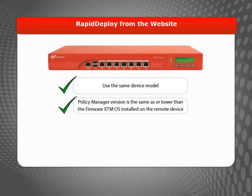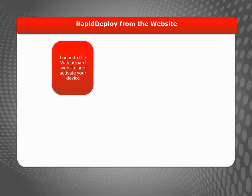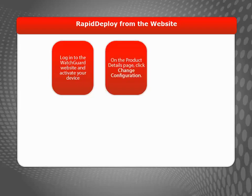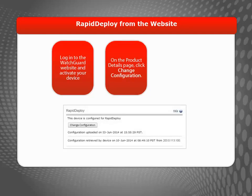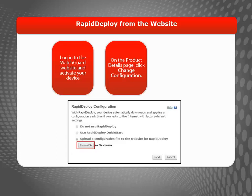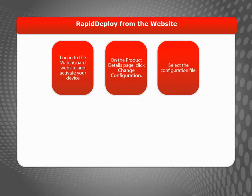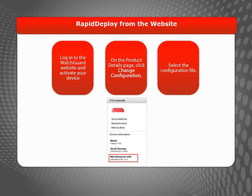With this method, you must use a Policy Manager version that is the same as or lower than the version of Fireware XTM OS installed on the device you want to configure remotely. To upload a configuration file for an activated device, log in to the WatchGuard website and go to the product details page for that device. In the Rapid Deploy section, click Change Configuration and then click Choose File. Finally, browse to the configuration file you created. This Rapid Deploy option is supported for Firebox devices and for XTM devices manufactured with Fireware XTM version 11.6.3 or higher.